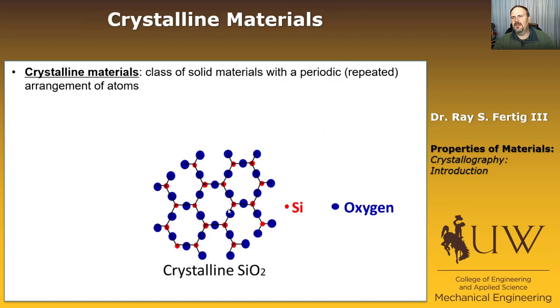Moving on, the corresponding category of materials is crystalline materials. And in this class of solids, we have some repeated or periodic arrangement of atoms. So again, I'm showing you silicon dioxide, except this is crystalline silicon dioxide. And you can see we have these repeated hexagons everywhere, and those could go on forever, basically.